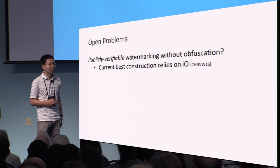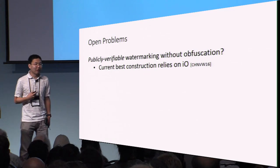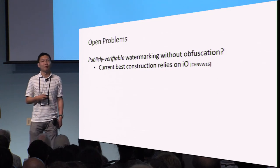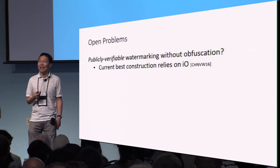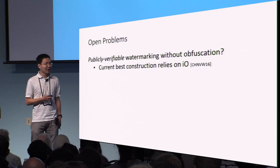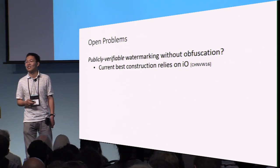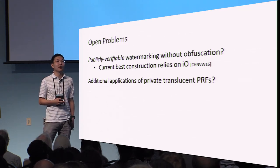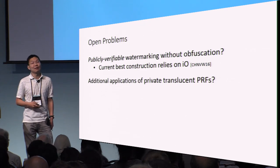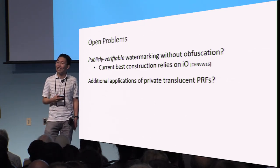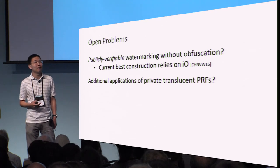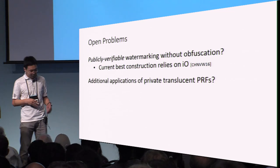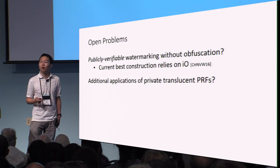Let me conclude with two open problems. First, can we build publicly verifiable watermarking without relying on obfuscation? All of the techniques here work in a secret key setting where we assume that the marking and the verification algorithms have a common key. The current best construction of this primitive is due to Cohen et al. and still relies on obfuscation. Second, I think there might be other interesting applications we can explore using this new primitive of private translucent PRFs. They seem to provide more power than private puncturable PRFs, but still have the advantage that we can instantiate them from standard lattice assumptions. Can we build new primitives and base new techniques on these standard assumptions? And with that, I'll open the floor to questions.